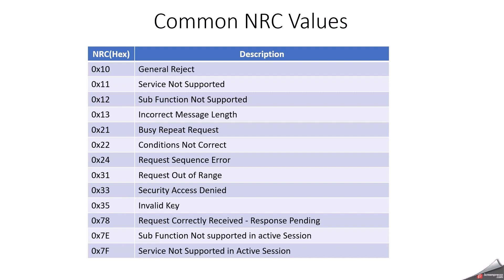NRC 35 means invalid key — a wrong key was provided during the security unlock process, especially on the 0x27 (security access) service. In that case, you will get NRC 35. NRC 78 means the request is correctly received and the response is pending — the ECU is still processing, so wait before sending the next request.